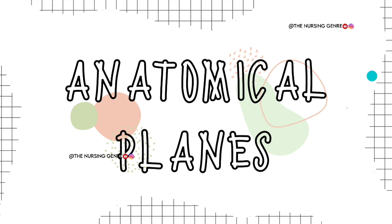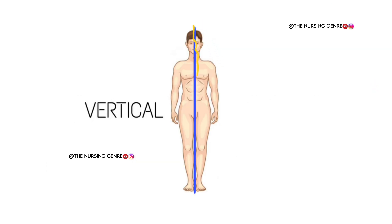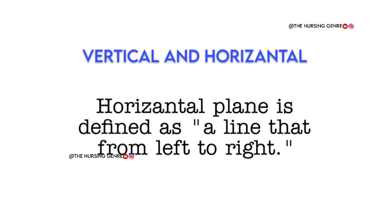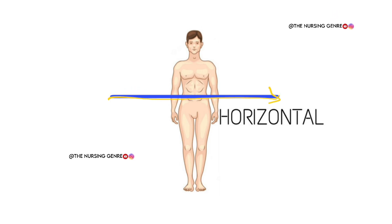Now, anatomical planes. The first difference is vertical and horizontal planes. Vertical plane is defined as a plane that passes through a vertical line. Horizontal plane is defined as a line that extends from left to right — passed through the horizontal plane.